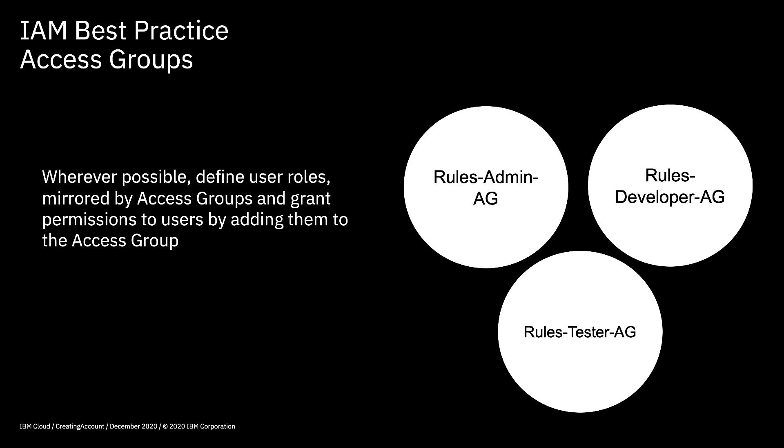The advantage of this approach is that you're only granting access once — to the access group rather than to lots and lots of individual users. And if somebody changes role or leaves the project, it's easier to take those people out of the access group than it is to go into their profile and start unpicking all the permissions they've got. So spending the time to create a solid set of access groups will actually save a lot of time and headache in the future.